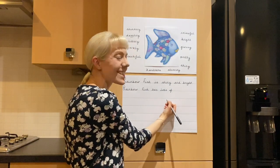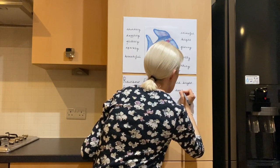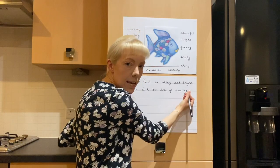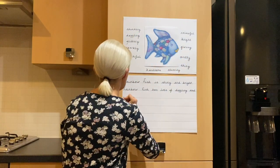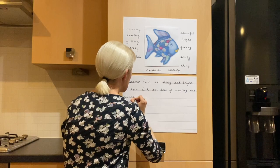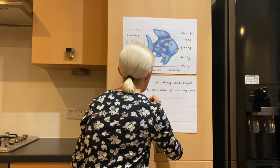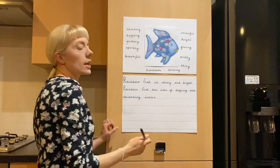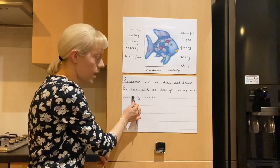Now can you help me sound this word out? Dazzling — D, A, Z, L, I, N, G. And shimmering — can you help me sound this word out? SH, I, M, M, E, R, I, N, G. Shimmering scales. That's the end of my sentence so I need a full stop. Can you help me read it and check it back? Rainbow Fish has lots of dazzling and shimmering scales.